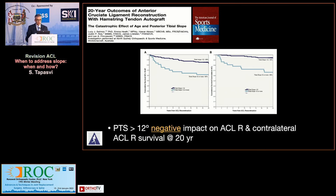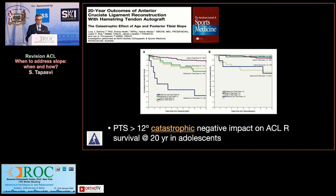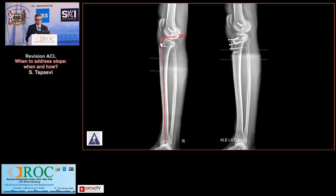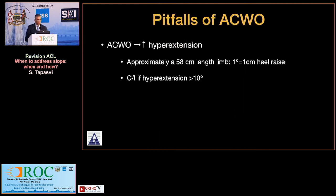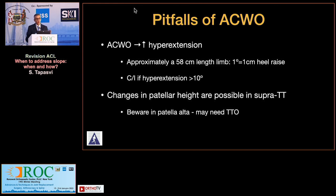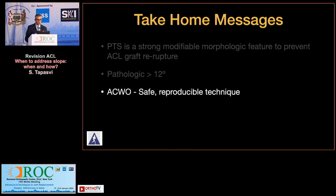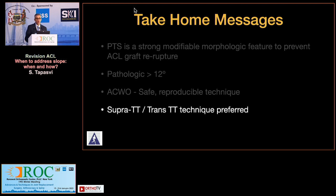Yes, this is important — a posterior tibial slope significantly increases the risk of ACL failure on both ipsilateral and contralateral sides, and this effect is even more pronounced in adolescents. The anterior tibial closing wedge procedure is very effective: it decreases the anterior slope and anterior tibial translation, achieving good outcomes. Be aware of three pitfalls: existing hyperextension may lead to recurvatum after anterior closing wedge; patella baja warrants a trans-TTO approach; and poor surgical technique may compromise the PCL. PTS above 12 degrees is pathologic, and a supra or trans-TTO technique is preferred.